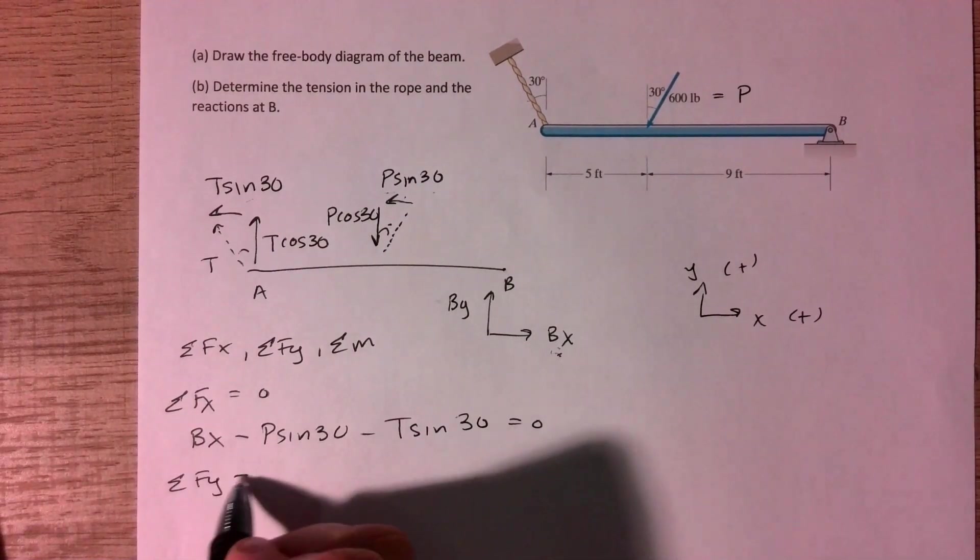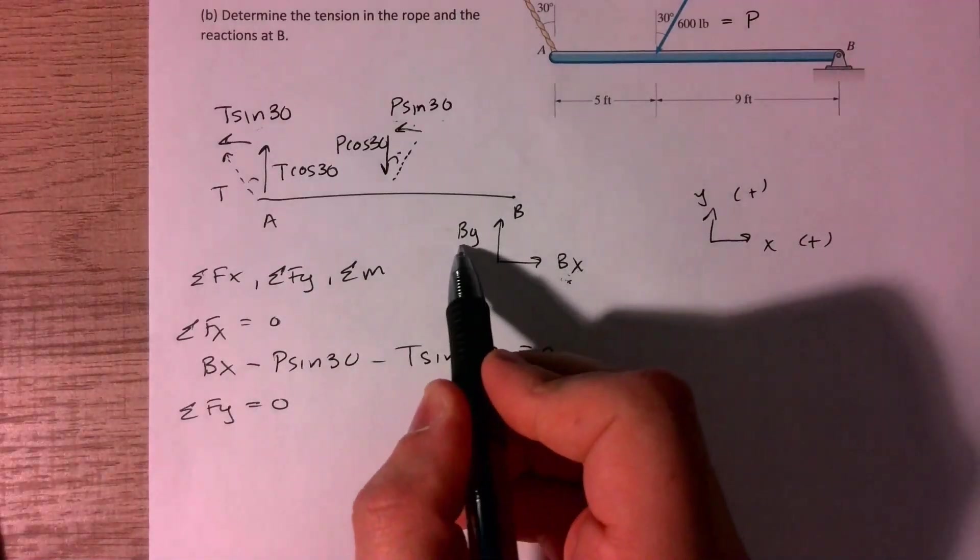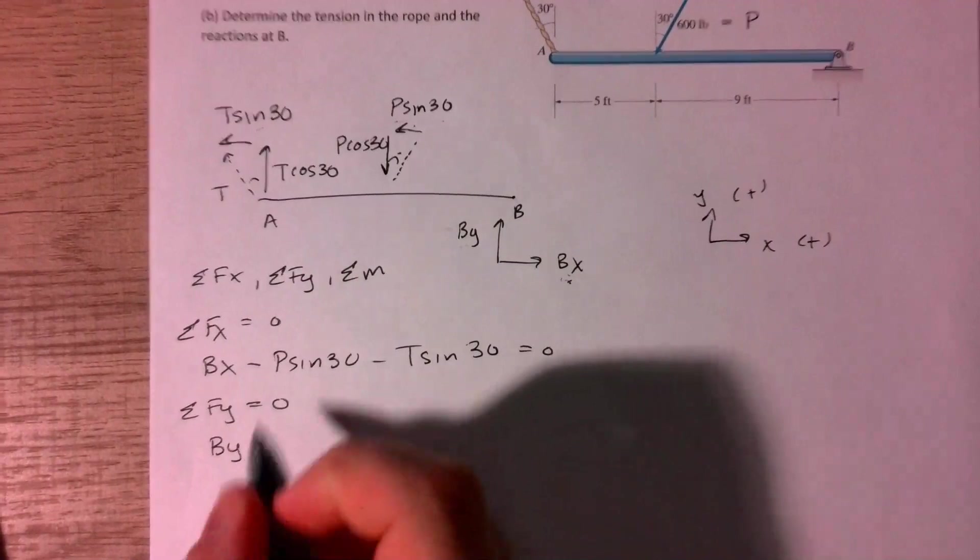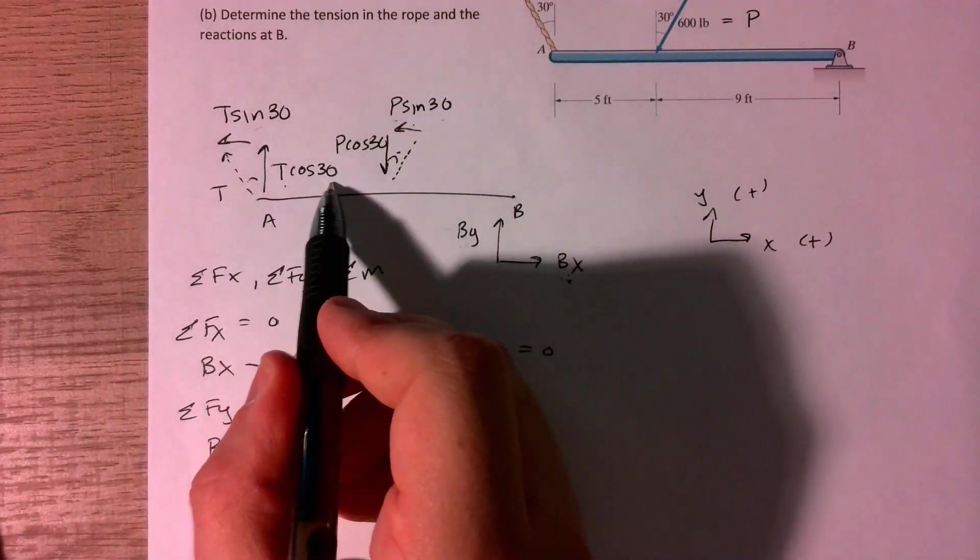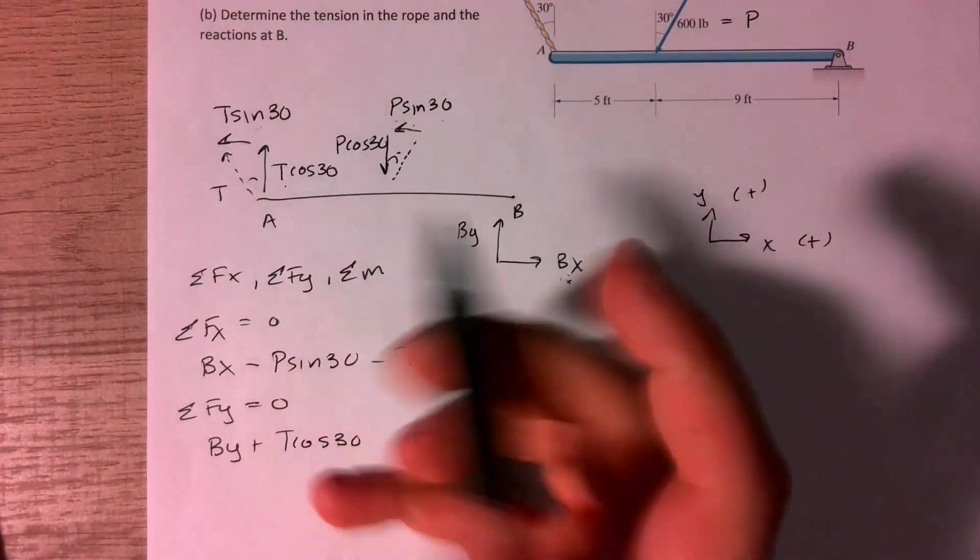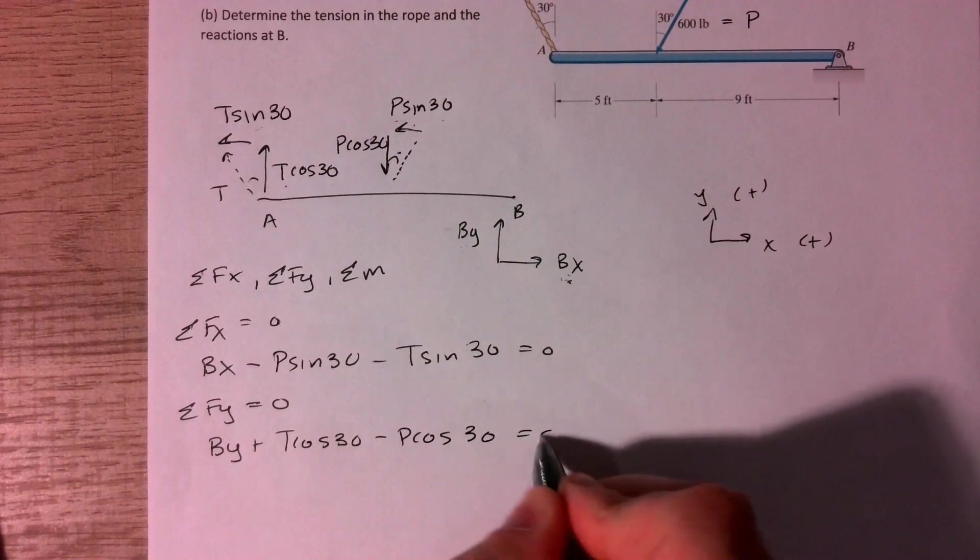Now it's time to sum up our forces in the y direction as well. So what we can do is we can start with our reaction force. So By is going up, so that'll be positive. T cos 30 is also going up, it'll also be positive. And then P cos 30 is going down, so that will be negative. And that's equal to zero.